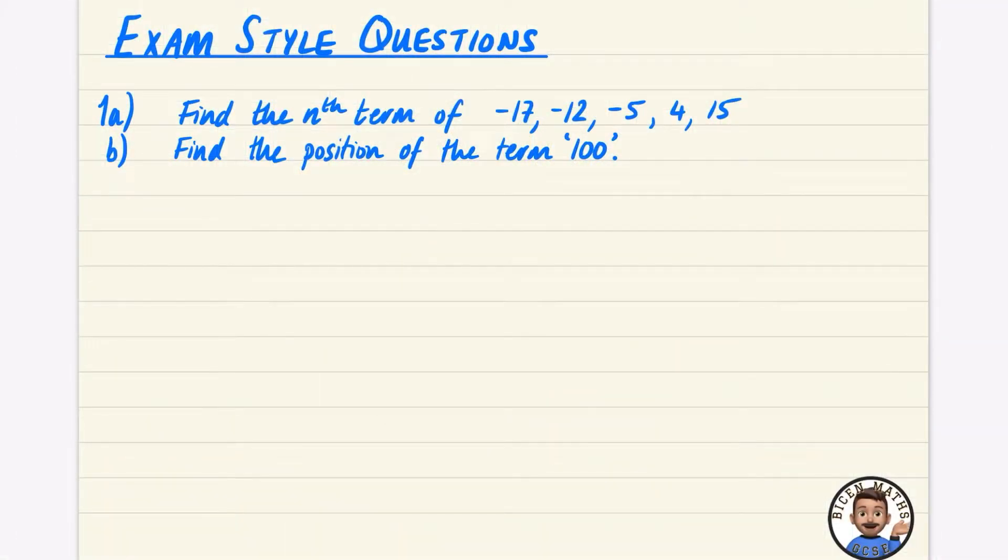Okay, so in this exam style question, part A wants us to find the nth term of this sequence that goes -17, -12, -5, 4, and 15. I'll find the first difference and the second difference.